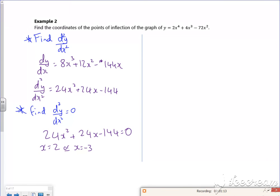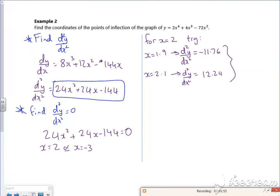Now what I need to do is check on either side of them. For x = 2, I'll sub 1.9 into this and it gives me a value of -11.76. Then I'm going to try x = 2.1, so d²y/dx² is 12.24. If you look, I've got a sign change around where I think my point of inflection is. Because remember, it might not be a point of inflection, it might just be a stationary point. So here there is a sign change, so there must be a point of inflection at x = 2.